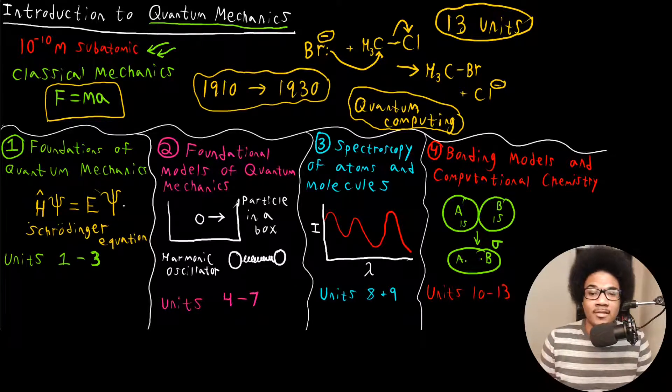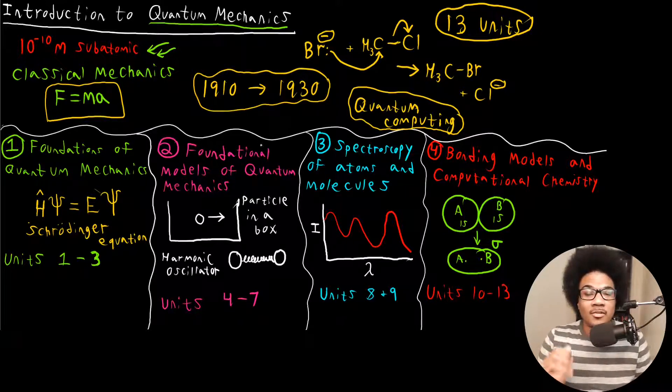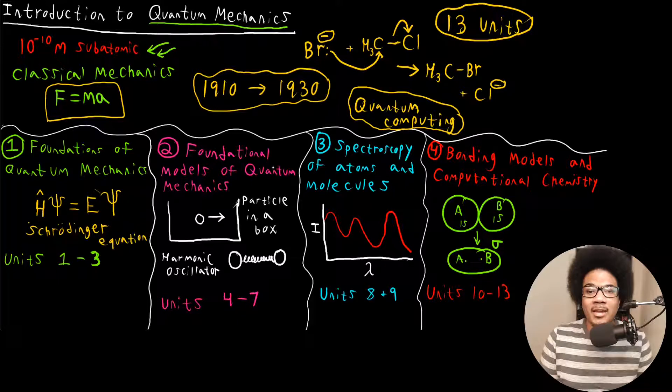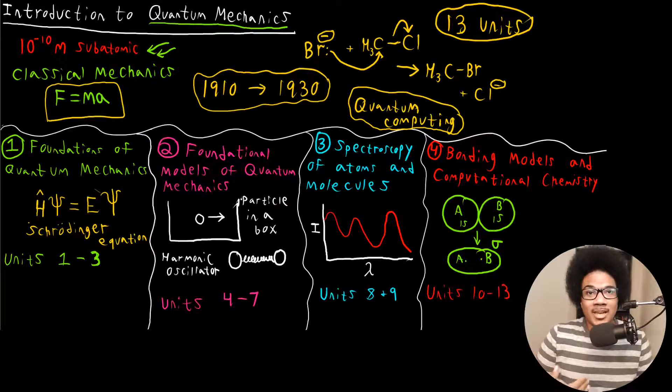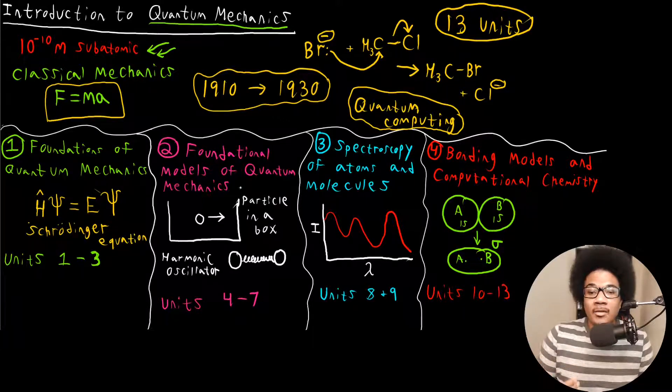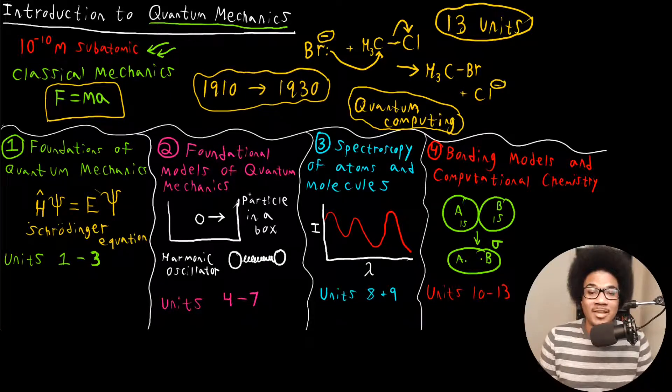So units one, two, and three are going to establish the foundation. Then we're going to move on to some foundational models of quantum mechanics. We're going to use Schrodinger's equation in order to build up these models of the motion and the energy of subatomic particles, of really small particles.